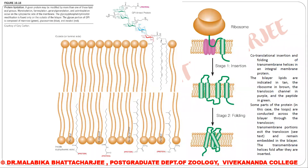Yesterday we completed the fluid mosaic model. We studied how the phospholipids are present, the various phospholipids, and then studied the proteins — integral, peripheral, and membrane proteins. Our last portion covered how membrane proteins are linked to a variety of lipids in the membrane when present as peripheral proteins. I talked about GPI, that is glycosyl-phosphatidyl inositol modification found in membrane structures.